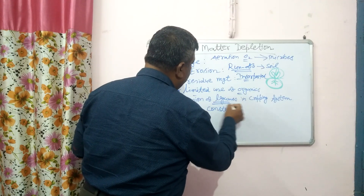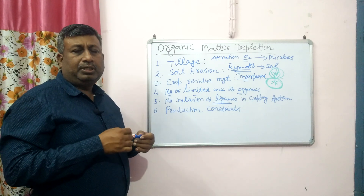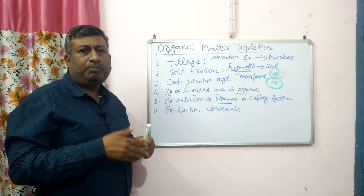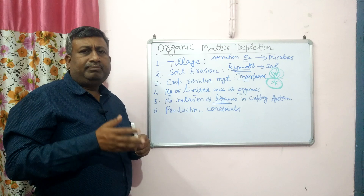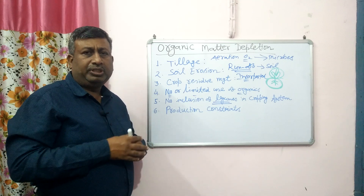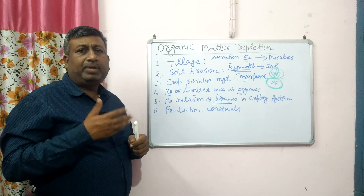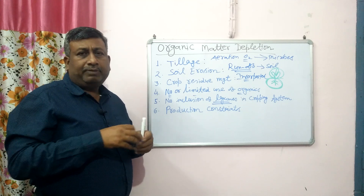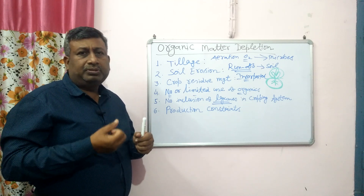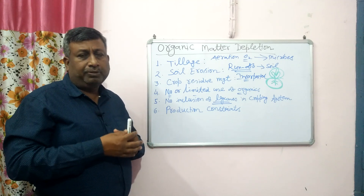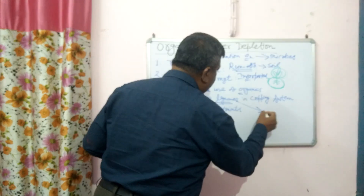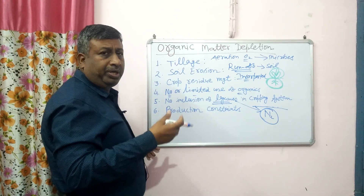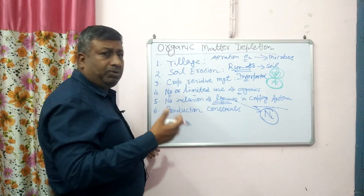Then there is no inclusion of legumes in the cropping system. In general, we use cereal-based cropping systems like rice-wheat, sugarcane-based, or potato-based systems. There is no legume, and we generally use very few legumes in crop rotation. Legumes have the capacity for biological nitrogen fixation — they can absorb atmospheric nitrogen through root nodules. Examples include mung bean, cowpea, field bean, pigeon pea, groundnut, and chickpea.